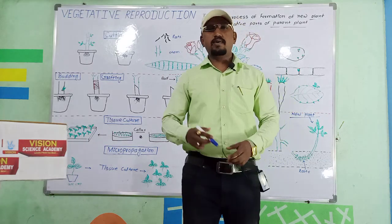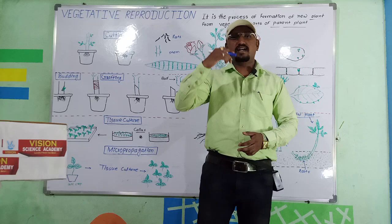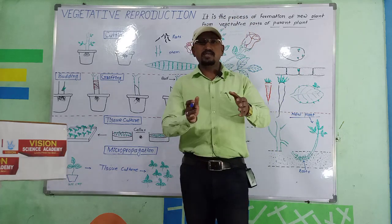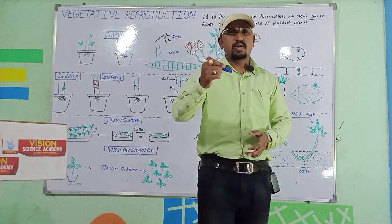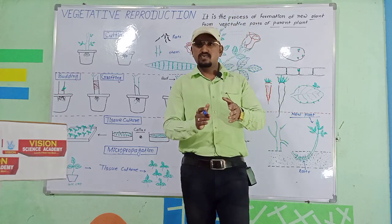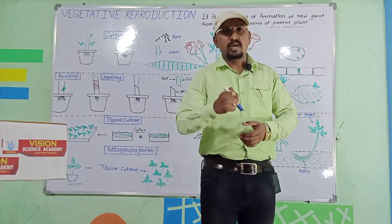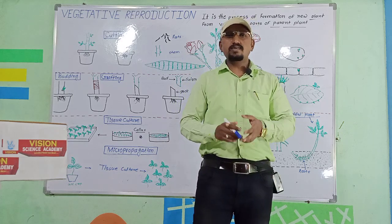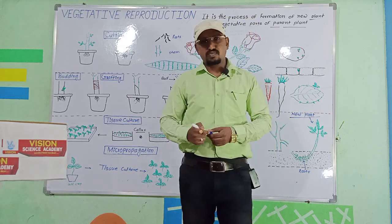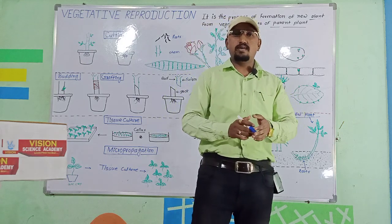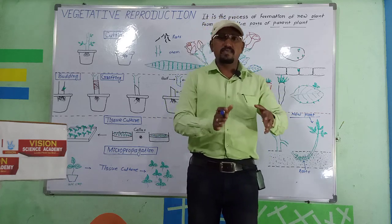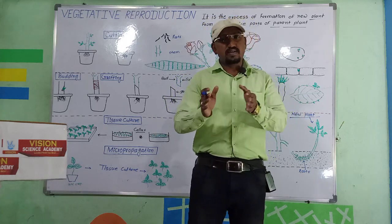Hi friends, today we are going to talk about the asexual mode of reproduction in higher plants called vegetative propagation. In the previous lecture we talked about asexual mode of reproduction in lower organisms. Today we discuss reproduction in higher plants in which plants get reproduced through their vegetative parts like root, stem, and leaves.